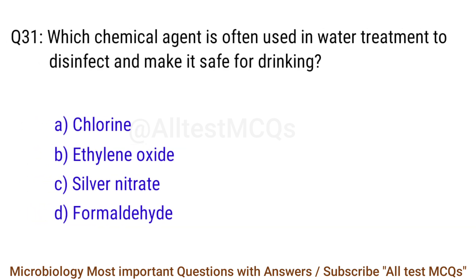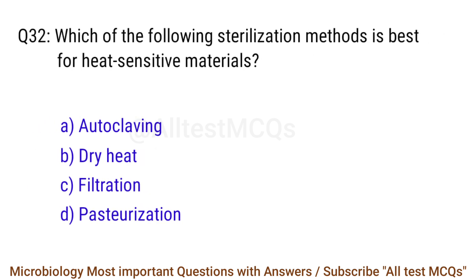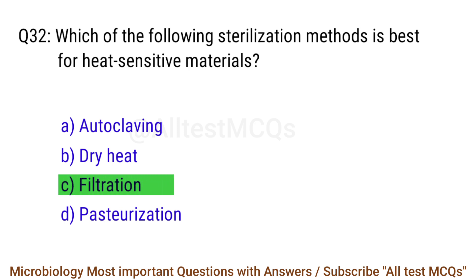Q31. Which chemical agent is often used in water treatment to disinfect and make it safe for drinking? The right answer is option A: Chlorine. Q32. Which of the following sterilization methods is best for heat-sensitive materials? The right answer is option C: Filtration.